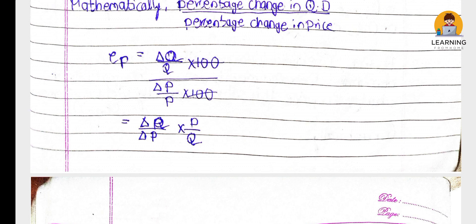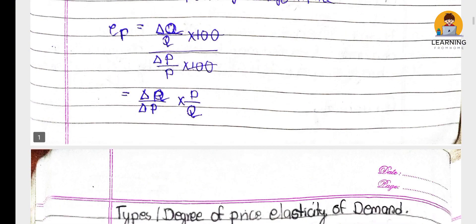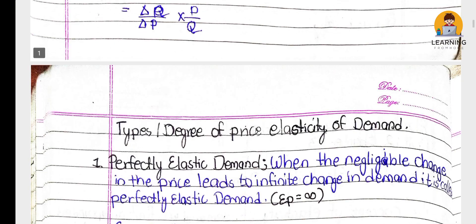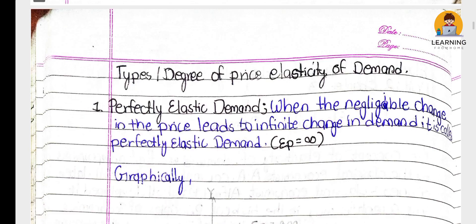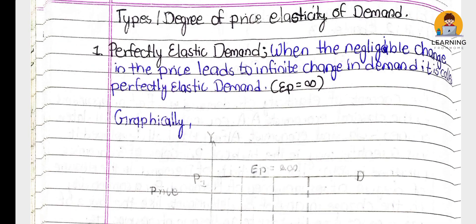There are 5 types of price elasticity of demand. The first is perfectly elastic demand. When the negligible change in price leads to an infinite change in demand, it is called perfectly elastic demand. So if there is a small change in price, there is an infinite change in demand - that is perfectly elastic demand.